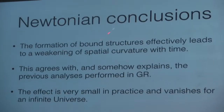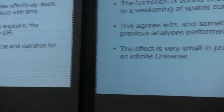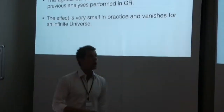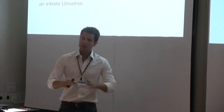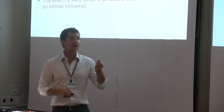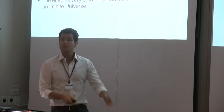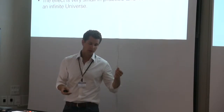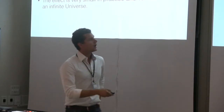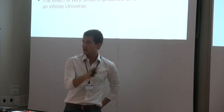The conclusion from this Newtonian analysis is that the formation of bound structures leads to a weakening of spatial curvature in time — a kind of back reaction effect. This agrees with fully relativistic results mentioned earlier, and tends to show that the effect is mostly Newtonian even when studied in fully relativistic settings. The effect is very small in practice for realistic values of N, and it vanishes for an infinite universe since it goes as 1 over N to the 2/3.